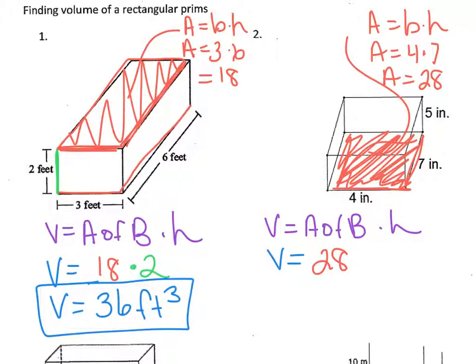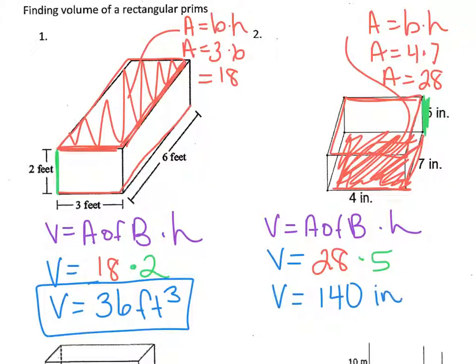The next thing we have to do is find the height of the prism. If it's sitting on the base, which this one is, the height is how tall it would be — which is this distance right here, which is 5. You can also think of it as: there's another rectangular base on the top, and how far apart is the base on the bottom from the base on the top? They are 5 inches apart. So, we do 28 times 5 and get 140, and this is going to be cubic inches. That's how much that box could hold.